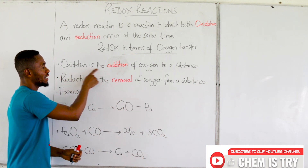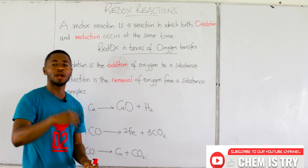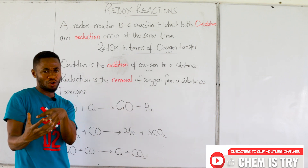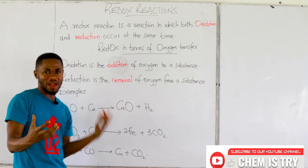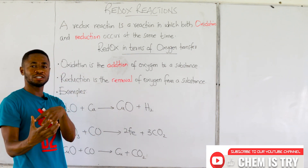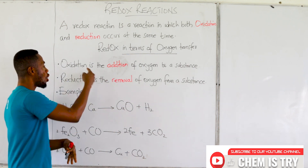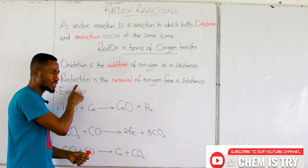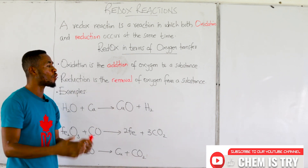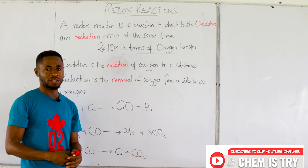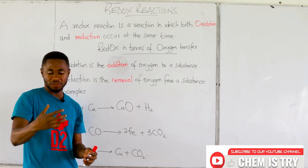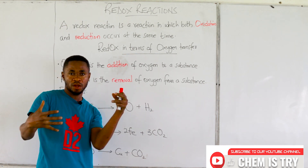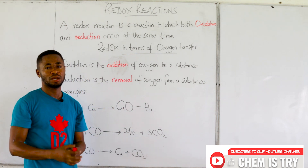Oxidation is the addition of oxygen to a substance — we have a substance and we add oxygen to it, and that process is what we term oxidation. Reduction is the removal of oxygen from a substance — we have a substance that has oxygen, and we take the oxygen from it.